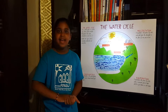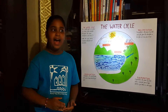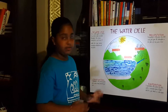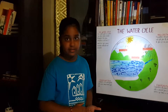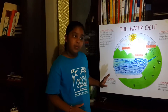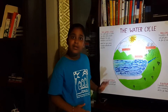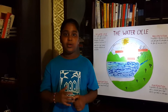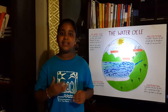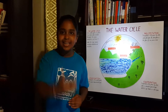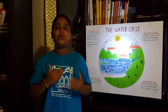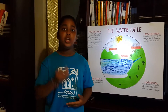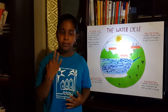Hello everybody. Today I will be showing you my version of the water cycle. A water cycle is a process by which water circulates through the oceans, atmosphere and land. It involves three major processes.